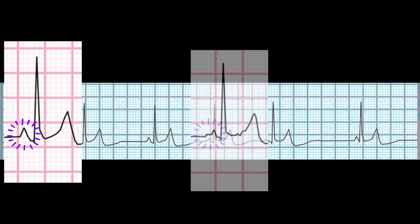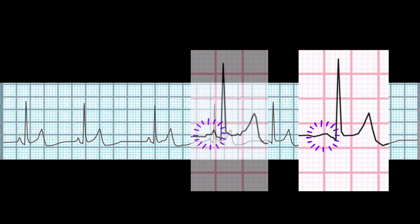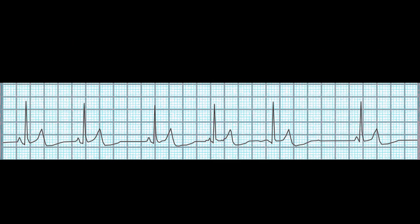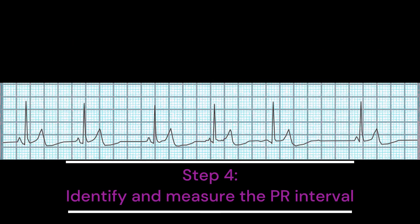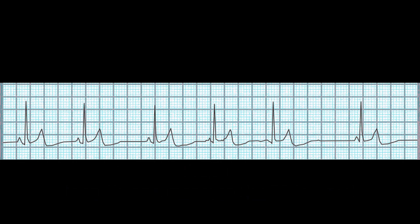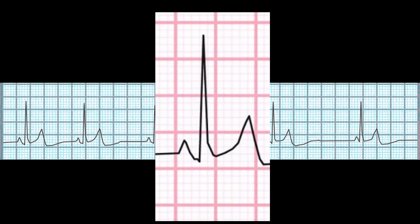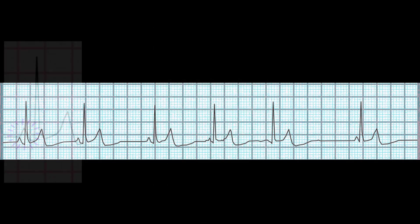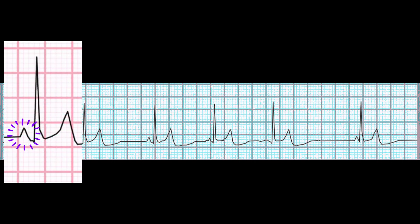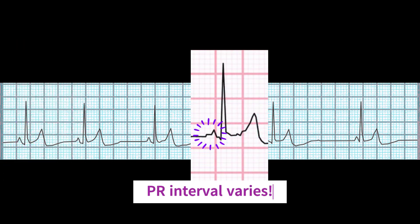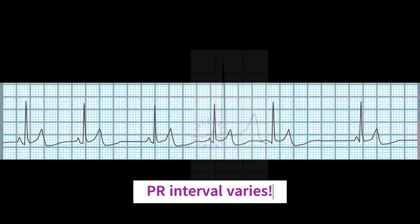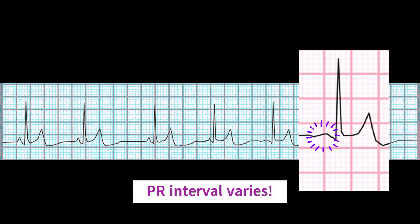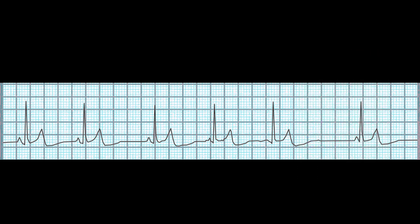This example has three distinct P-wave morphologies. Step 4: Measure the PR interval. The PR interval is the time between the start of the P-wave and the start of the QRS complex. In multifocal atrial rhythm, the PR interval varies considerably because the P-waves have different morphologies, as exemplified by the EKG strip.